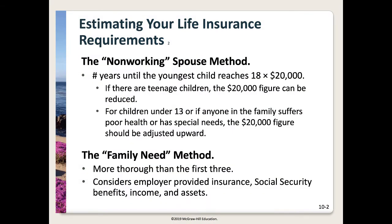The next method is the non-working spouse method. Insurance experts have estimated that extra costs of up to $20,000 a year may be required to replace the services of a homemaker or stay-at-home parent with small children. You use the number of years until your youngest child reaches age 18, adjusting upward for children under 13 or with special needs, and downward for teenagers.